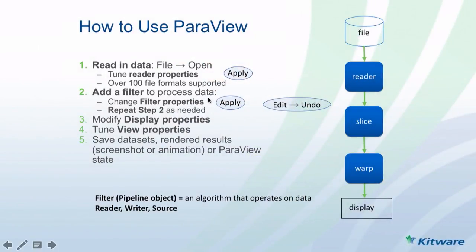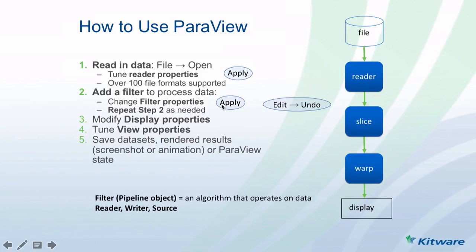How do you use ParaView? You start with File Open to read your data. You tune the filter and reader properties — this usually allows you to read only certain attributes so you don't fill up memory. You hit Apply after you do that. You add a filter to process the data, adjust the filter properties, and hit Apply. You keep adding filters as you transform your data — that's how you build your processing pipeline.